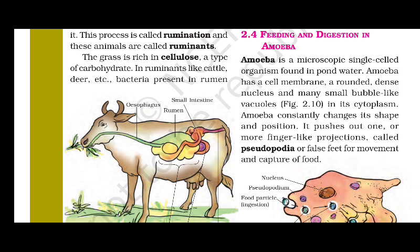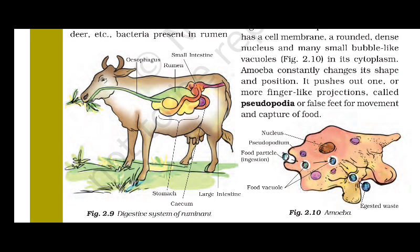Let's look at how amoeba performs its feeding and digestion. Amoeba is a microscopic single-celled organism found in pond water. It has a cell membrane around a dense nucleus and many small bubble-like vacuoles in its cytoplasm.